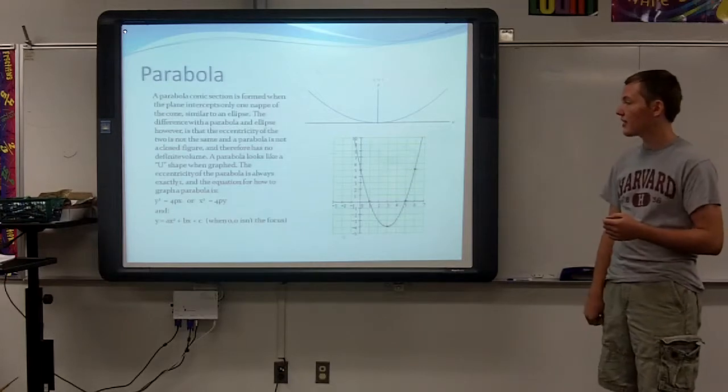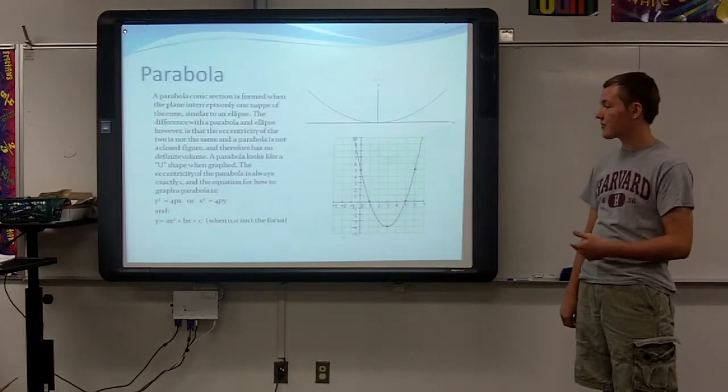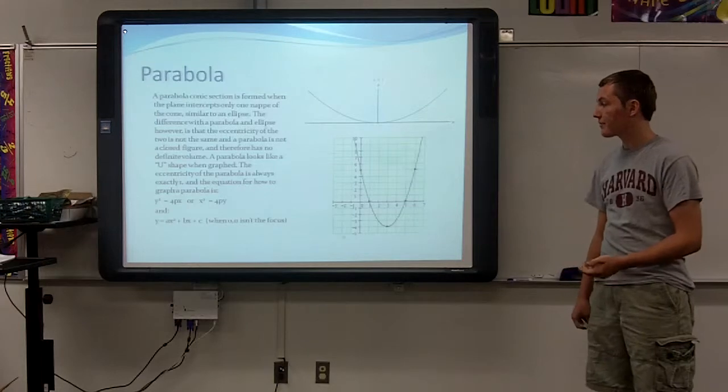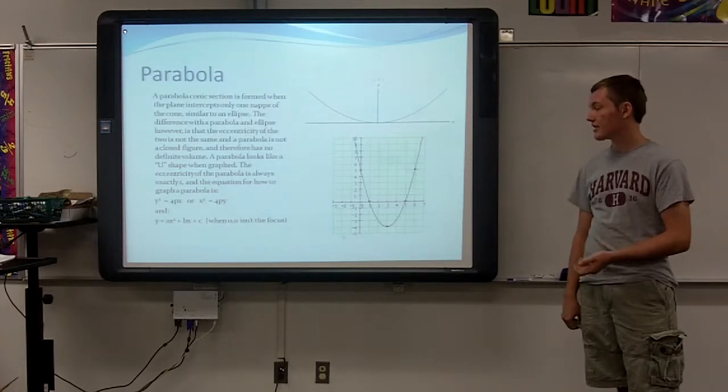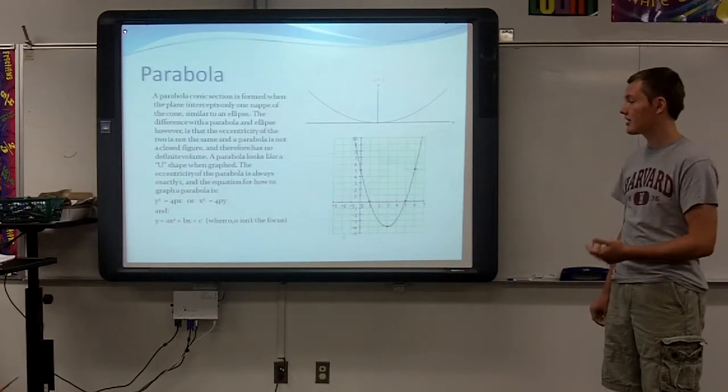And the equation for how to graph a parabola is y squared is equal to 4px, or x squared is equal to 4py. And y is equal to ax squared plus bx plus c, when zero, zero, isn't the focus.